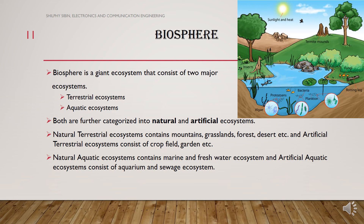Next, we will study about the Biosphere. The Biosphere is a giant ecosystem that consists of two major ecosystems: terrestrial and aquatic. Natural terrestrial ecosystems include mountains, grasslands, forests, and deserts. Artificial terrestrial ecosystems include crop field ecosystems and garden ecosystems. Natural aquatic ecosystems include marine and freshwater ecosystems, while artificial aquatic ecosystems include aquarium and sewage ecosystems.